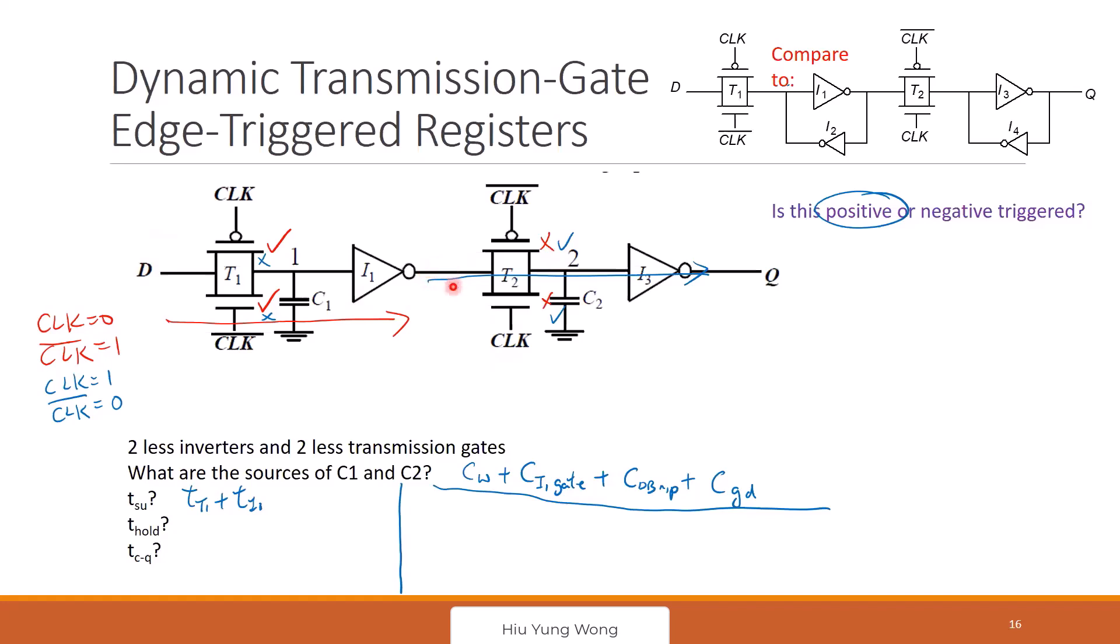How about the hold time? Once I copy, does the D need to hold? No need, right? Because once I copy, even you change the D, this one is off, right? Because when it is at blue, where I copy, this is off. You can keep changing D, I don't care. It's not affecting me. So, the hold time is zero, okay?